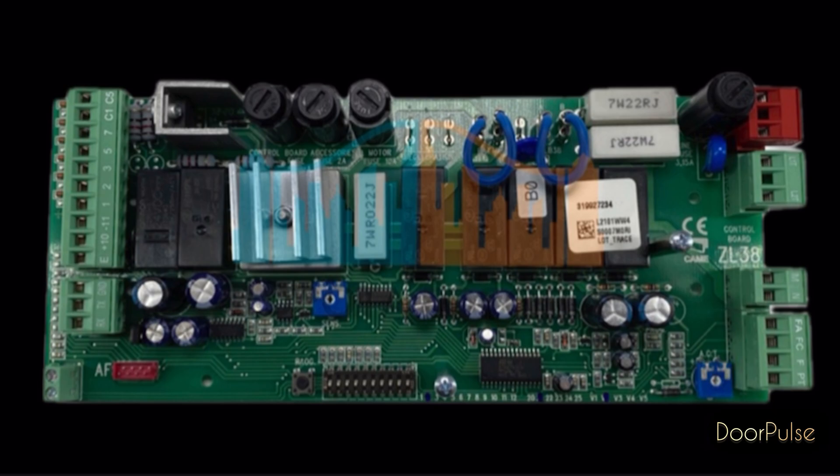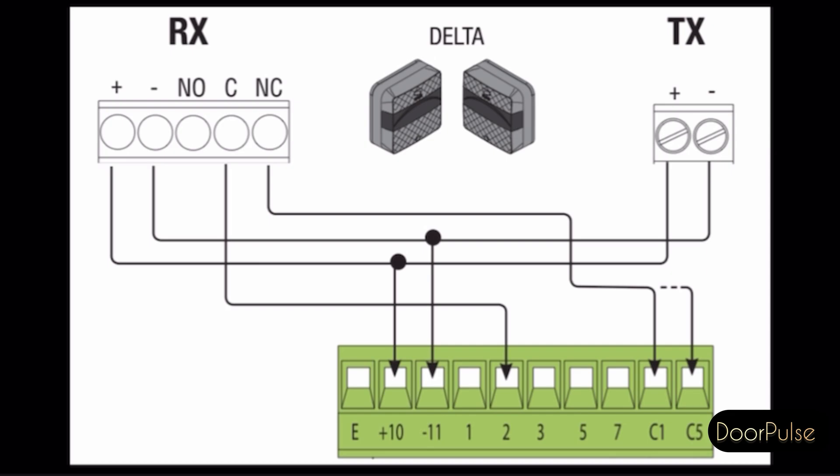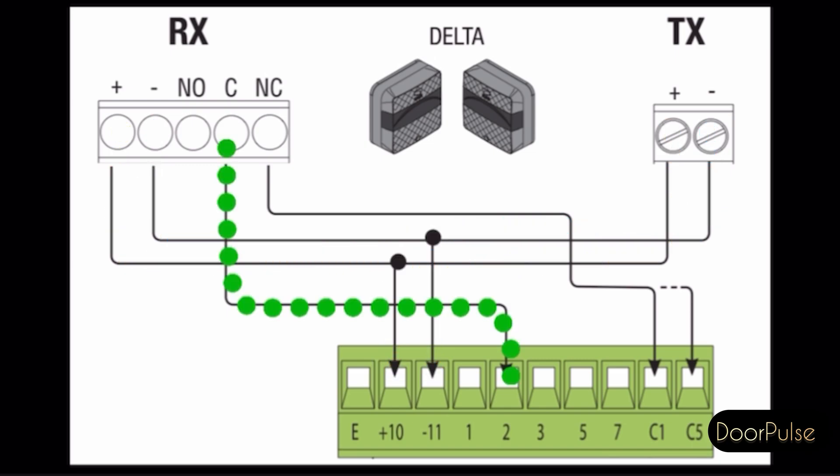On CAME we have two type photo cell connections. If you have delta photo cell set the connections I will show you. The power supply for photo cell in control board pin 10 and pin 11 is output power supply for photo cell connections. The power connect to RX and TX. And this is the common pin. And this is NC pin.